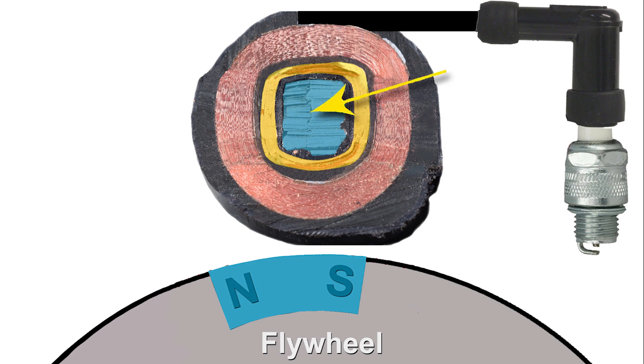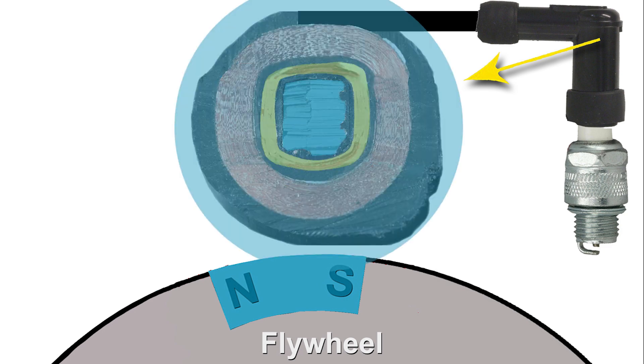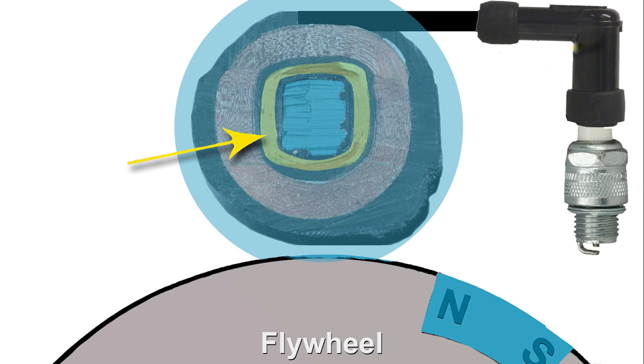When the magnet passes the coil, that magnetic field is sent down the iron core in the center of the primary coil. This excites the electrons in the atoms in the primary coil, pushing them forward and creating an electric current. This current flow through the primary coil creates an electromagnetic field. This electromagnetic field is strong enough and large enough to engulf the secondary coil. This electromagnetic field only exists in the split second that the fixed magnet on the flywheel passes the coil pack.